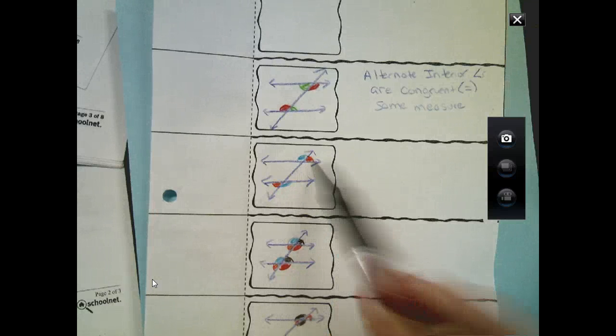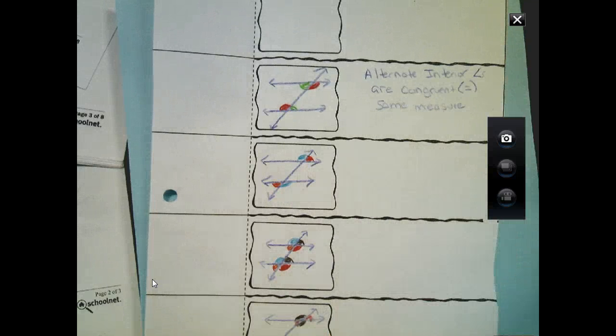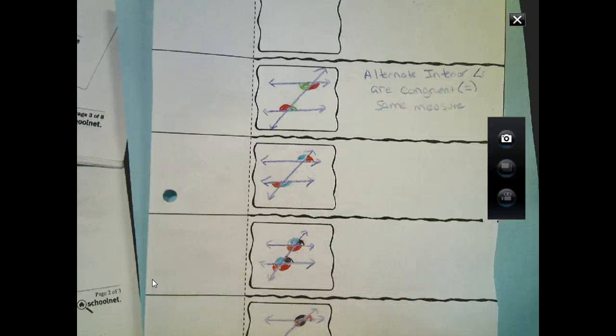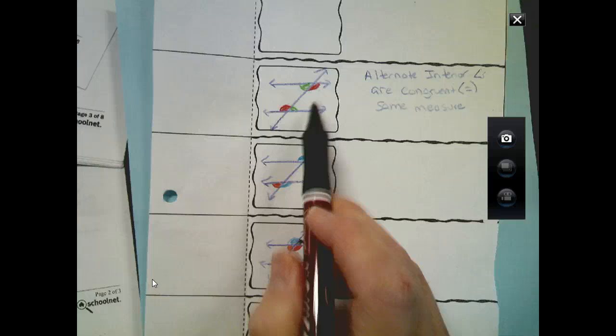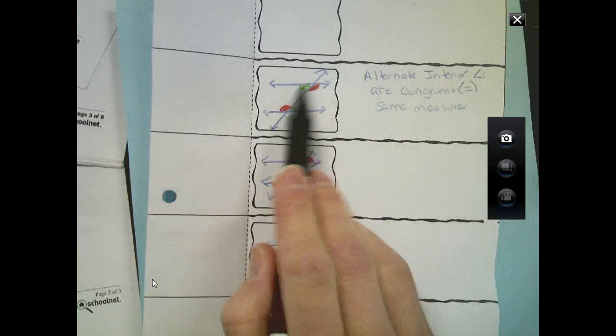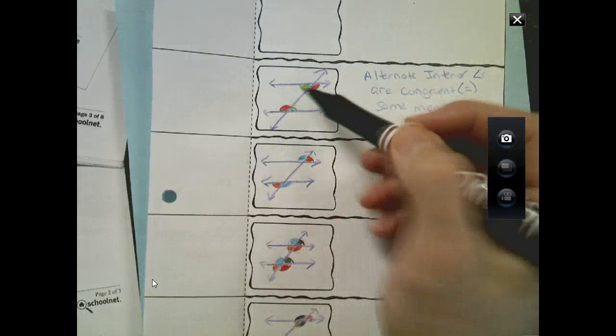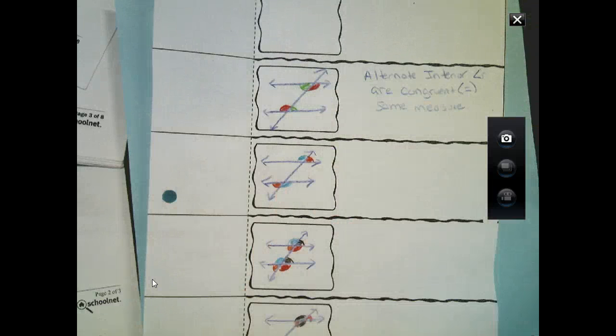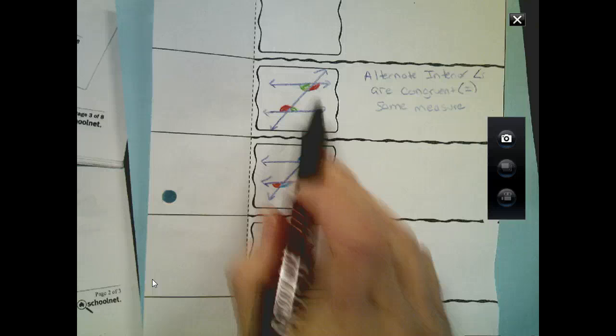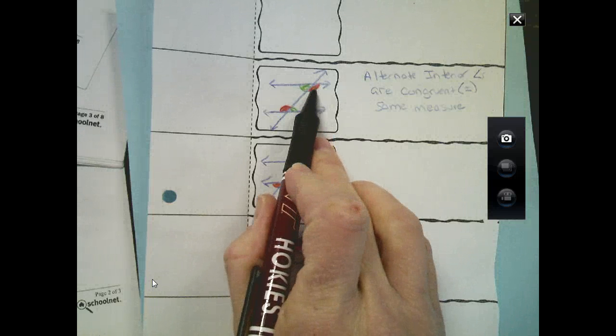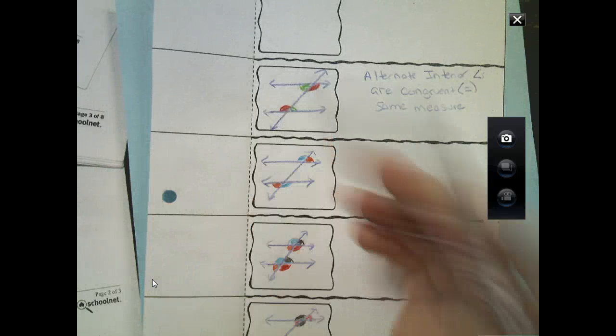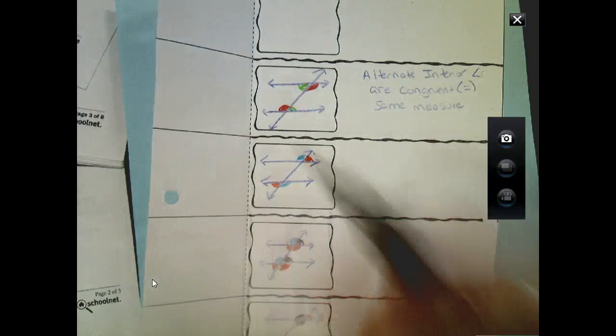Same thing here. Again, these guys have the same measure. Alternate exterior. And something I want to go back and kind of mention here that I didn't mention before. Now, if I take both of these together, that's going to equal 180 degrees. Because all together, when I go all the way around, they're going to be 360. So, keep that in mind. If this one's 70, well, this one has to be 110. So, I mean, because they have to equal 180.